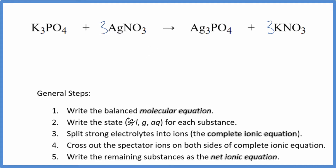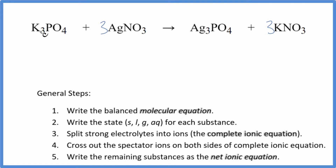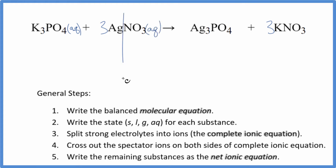The next step is we write the states for each substance. Phosphates in general are insoluble, but potassium compounds are very soluble — same for sodium — so this is actually going to be a soluble phosphate. We write AQ because it's soluble. Silver nitrate: nitrates are very soluble, so that'll be aqueous — it will dissolve and split apart into its ions.